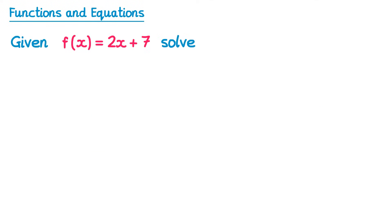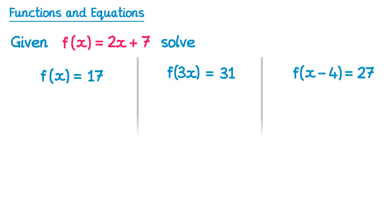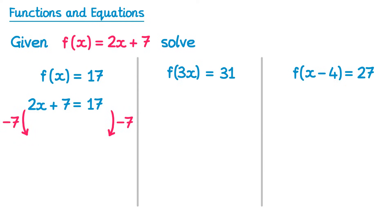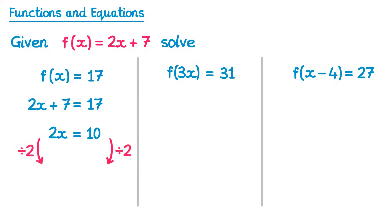Let's take a function f(x) = 2x + 7 and we're going to solve three different equations using this function. The first equation is f(x) = 17. Since we know that f(x) is 2x + 7, we replace f(x) with 2x + 7 on the left hand side and keep 17 on the right. We subtract 7 from both sides, leaving 2x = 10, then divide both sides by 2 to give x = 5.